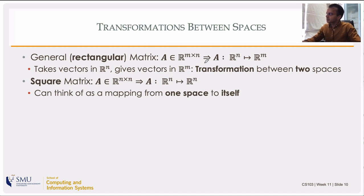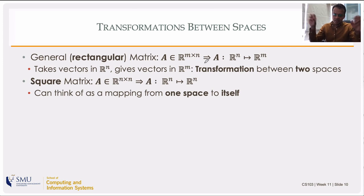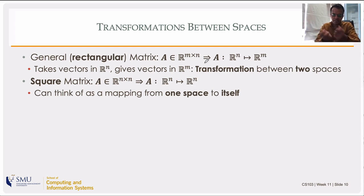If you take a square matrix, the input space is R^n and the output space is also R^n. So you can think of A as taking a vector in R^n and transforming it in some way and giving you another vector in the same space.